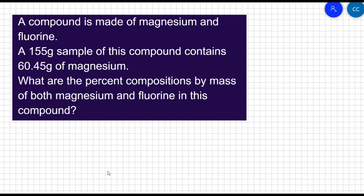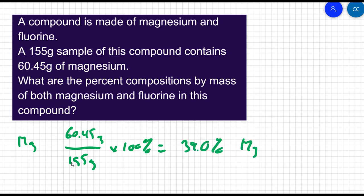You find the percent composition of something the same way you would find the percentage of anything. You take the amount that you're looking for, divide it by the total amount, and then multiply it by 100%. So if I want the percent composition of magnesium, I would take the mass of magnesium, which is 60.45 grams, divide it by the total mass of 155 grams, and turn it into a percentage. When I do that, I get 39% magnesium.